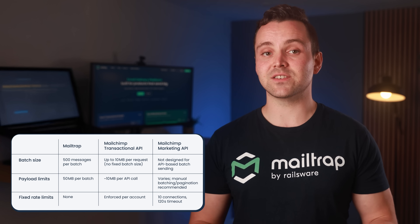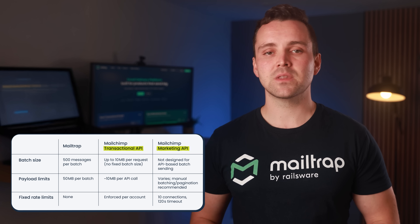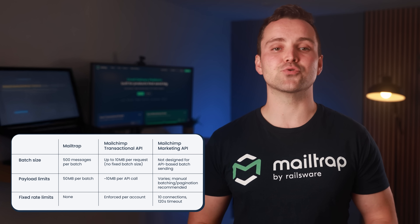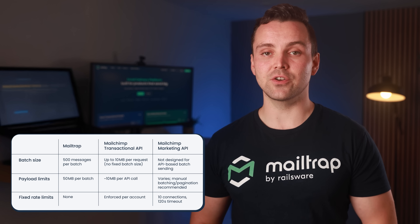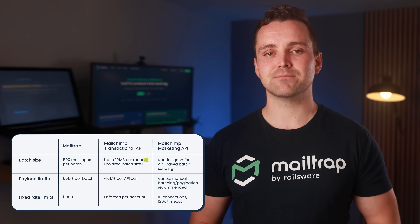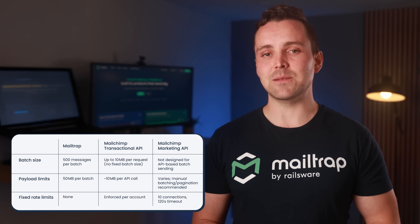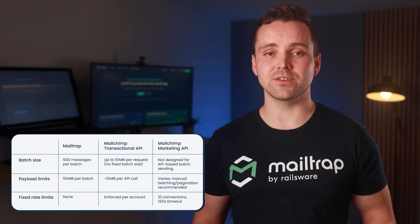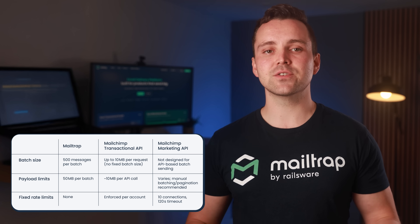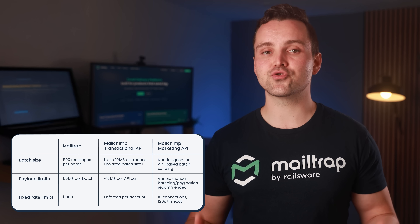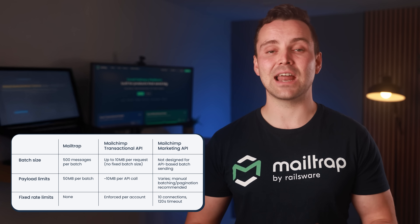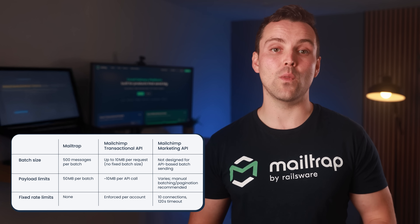MailChimp splits sending between two APIs. The transactional API, formerly Mandrill, handles user-triggered, event-based sends with a 10 megabyte request limit. The marketing API is built for campaign operations, not real-time sending. It runs on shared infrastructure with strict connection limits, and expects developers to handle pacing and batching on their own.